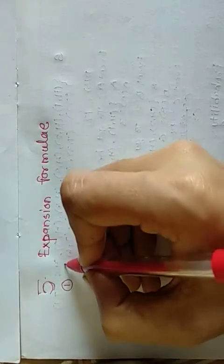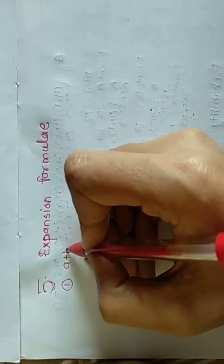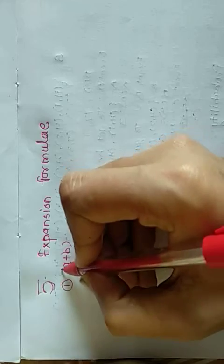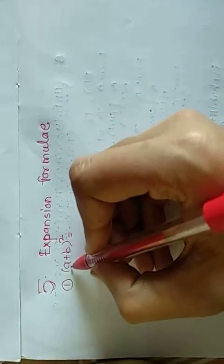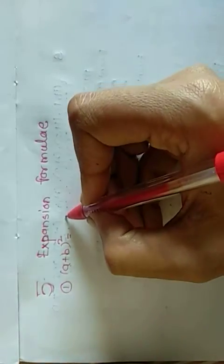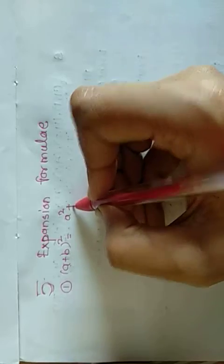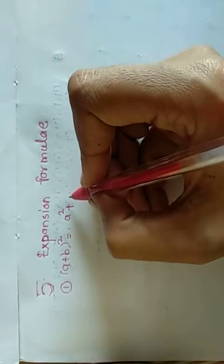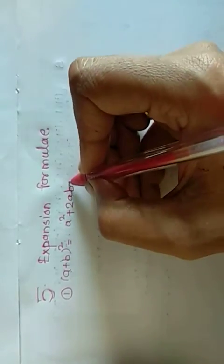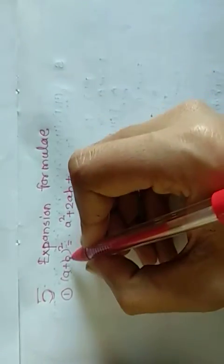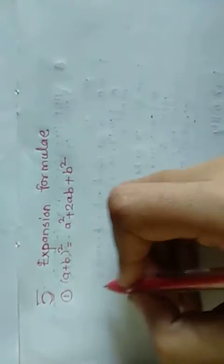Let's see the first formula. (a+b)² is equal to the square of the first term, that is a², plus 2ab, plus the square of the last term, that is b².